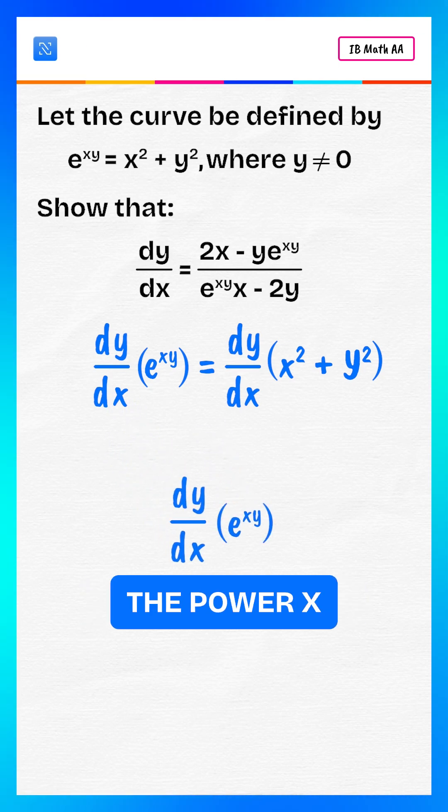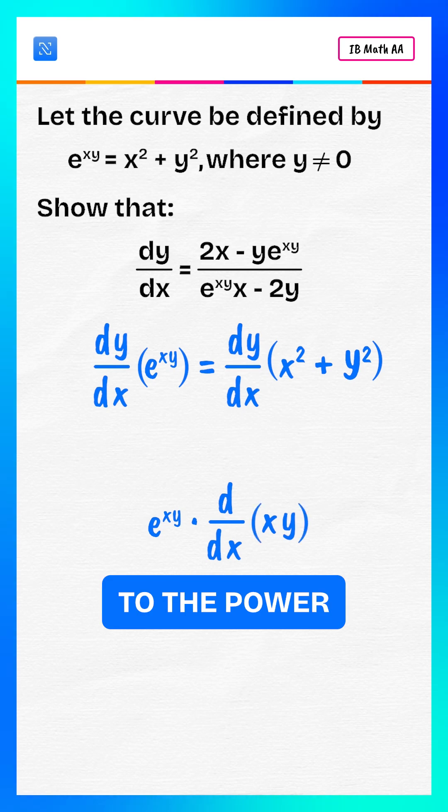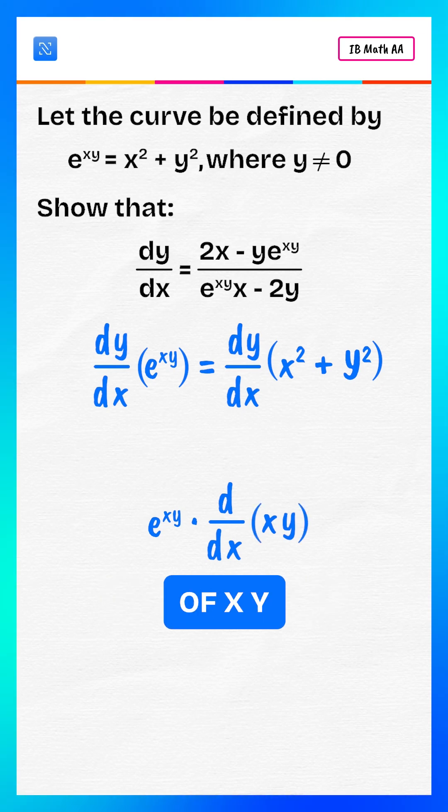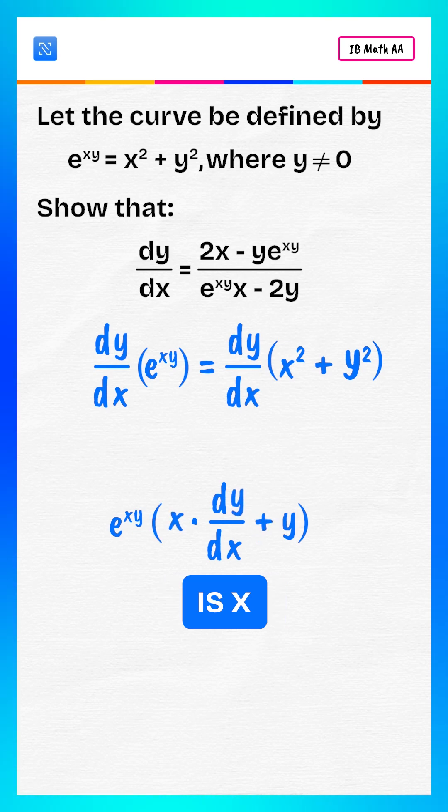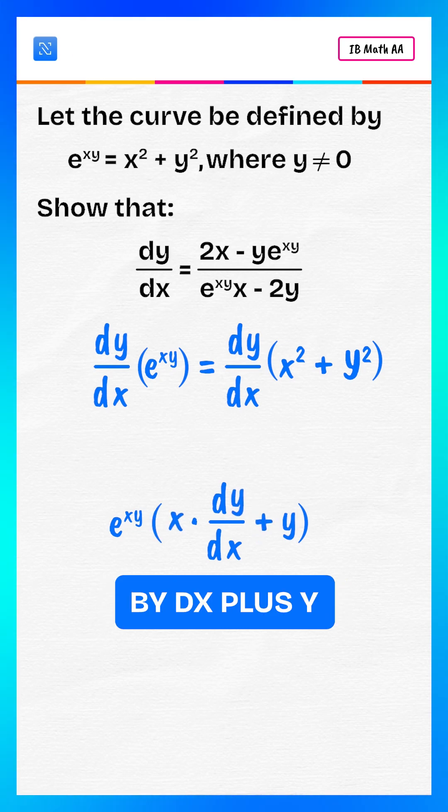Derivative of e to the power xy is e to the power xy multiply derivative of xy. Derivative of xy is x multiply dy by dx plus y.